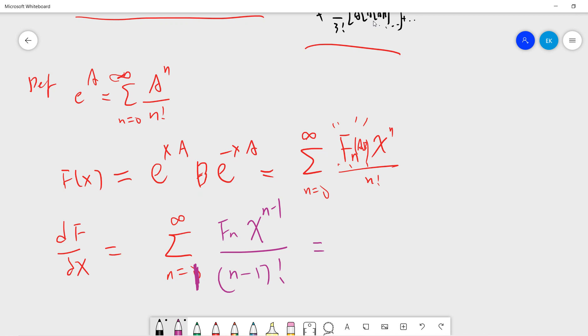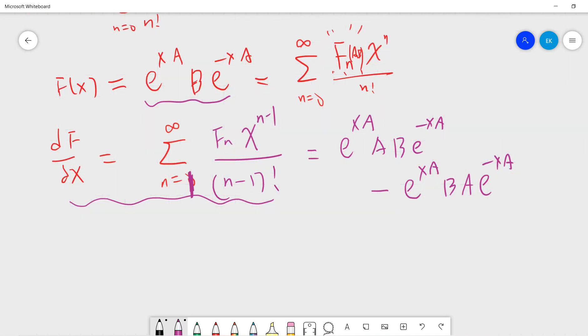With respect to d/dx, we get e^(xA)·A·B·e^(-xA) minus e^(xA)·B·A·e^(-xA). We can write it down. By the way, A is commutative with exponential e^(xA). From this, we can shuffle these two terms, and what we get is [A, f(x)].